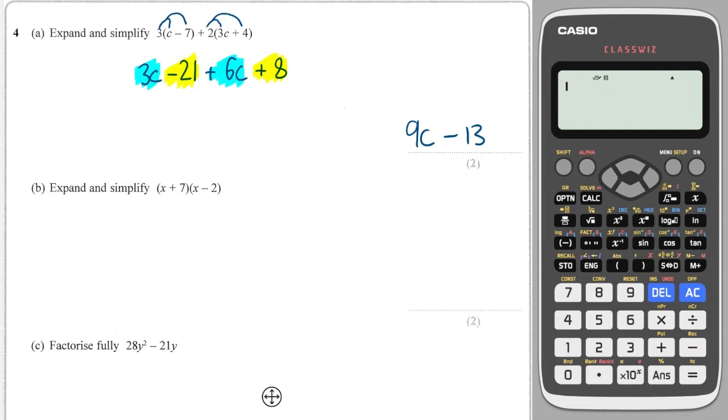Next, we've got a double bracket. Now I use the claw method, so I'll do x times x first, which is x squared. I'll then do x times minus 2, which is minus 2x. I'll do 7 times x, which is plus 7x. And then I'll do 7 times minus 2, which is minus 14. And you see it makes this little lobster claw.